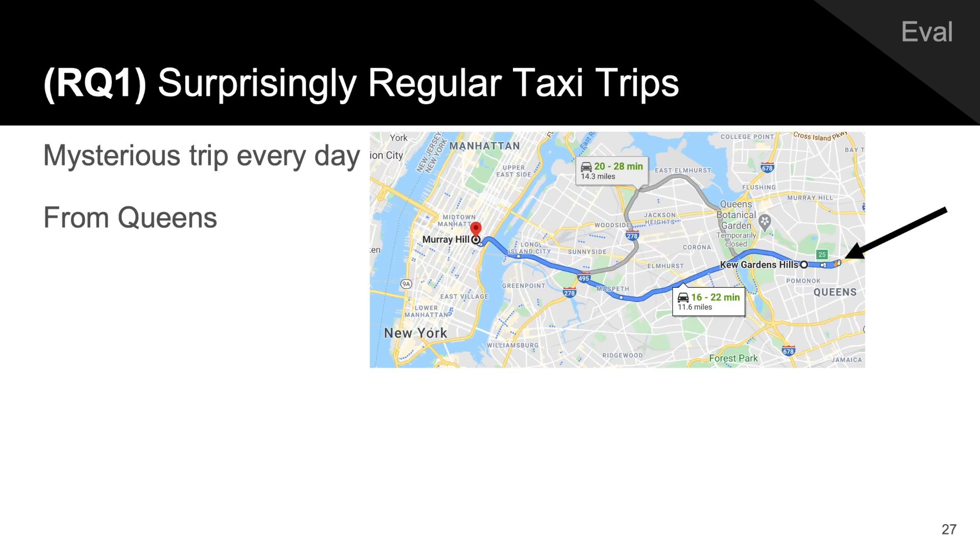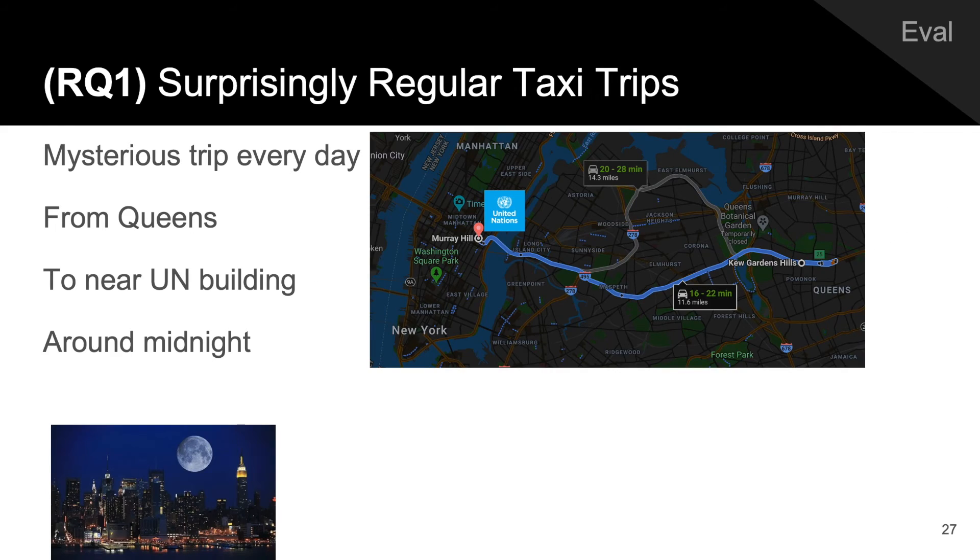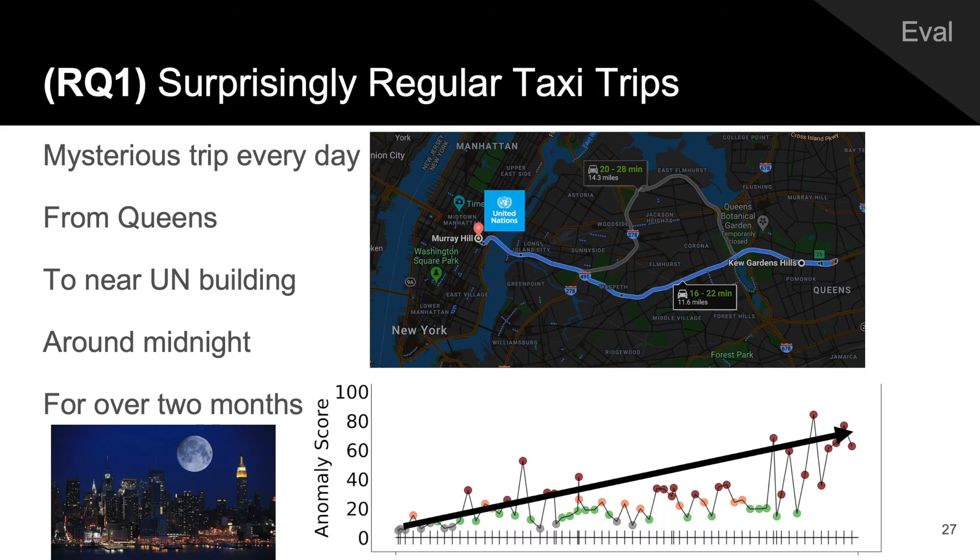We also show that we can make similar insights in real-time, discovering a mysterious taxi trip taken every day from Queens, New York to near the UN building, right around midnight, and repeated every night for over two months. PenMiner, when employed for anomaly detection, flags each occurrence of the trip, and the alarm gets stronger as the trip is repeated.